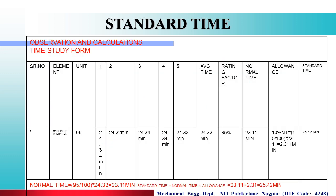Now we look at the observations and calculations in the time study table. The serial number column is first, then the element, then the unit. The number of units observed are 1, 2, 3, 4, and 5. Then average time and standard time are calculated.